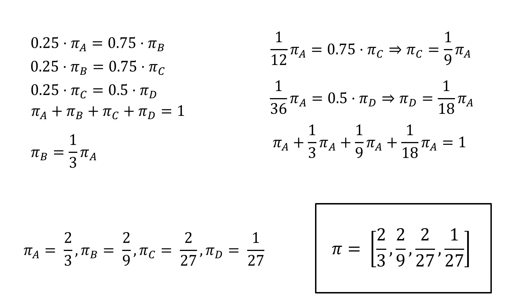Here we take the relationships that we calculated using the cut method and solve them as a system of equations. There is a key equation here that we haven't mentioned yet, but should make sense. The sum of all the entries in the stationary distribution vector should be equal to 1.